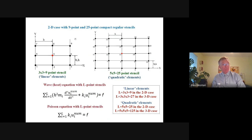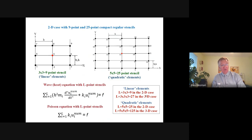Some examples of compact stencils in the two-dimensional case: regular stencils located far from the boundary or interfaces — for example, 3×3 stencils with nine points or 5×5 stencils with 25 grid points. These stencils are similar to those for linear and quadratic finite elements. For the wave and heat equations and Poisson equation with L number of grid points, the number of points included in the stencils equals 9 and 27 in two and three dimensional cases for linear elements, and 25 (5×5) and 125 for quadratic elements in the 2D and 3D cases.